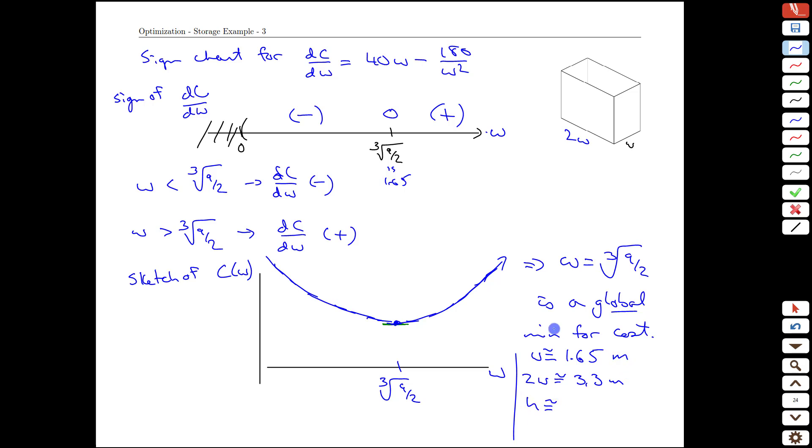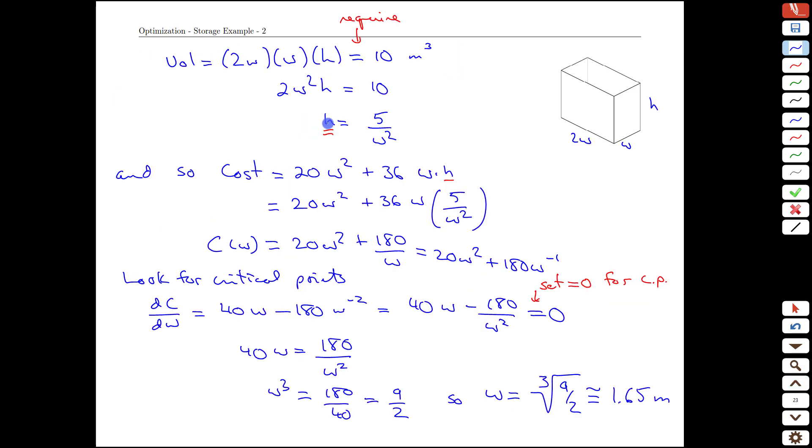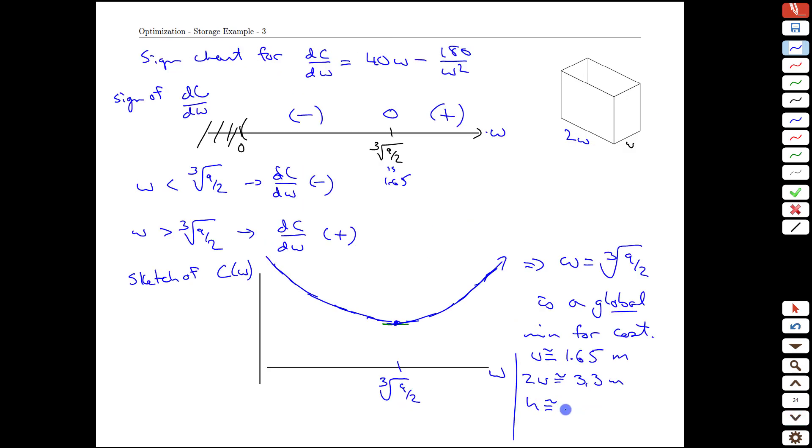The height would be approximately, we can't see it on this page, but if we go back a page, the height is going to be 5 divided by w squared, 5 over w squared, which is approximately 1.8 meters. So our cost function, we need a little bit more room here.